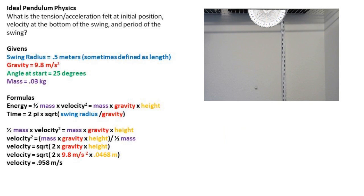We can plug our numbers into the velocity formula we found to give us our velocity at the bottom of the swing of 0.958 meters per second.